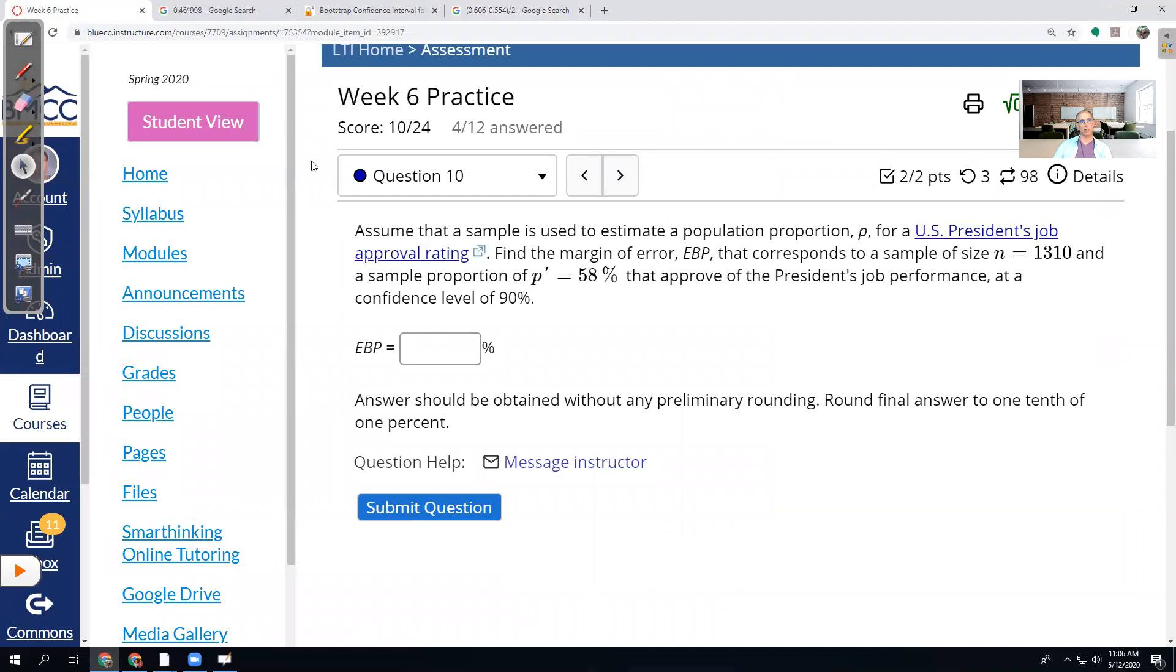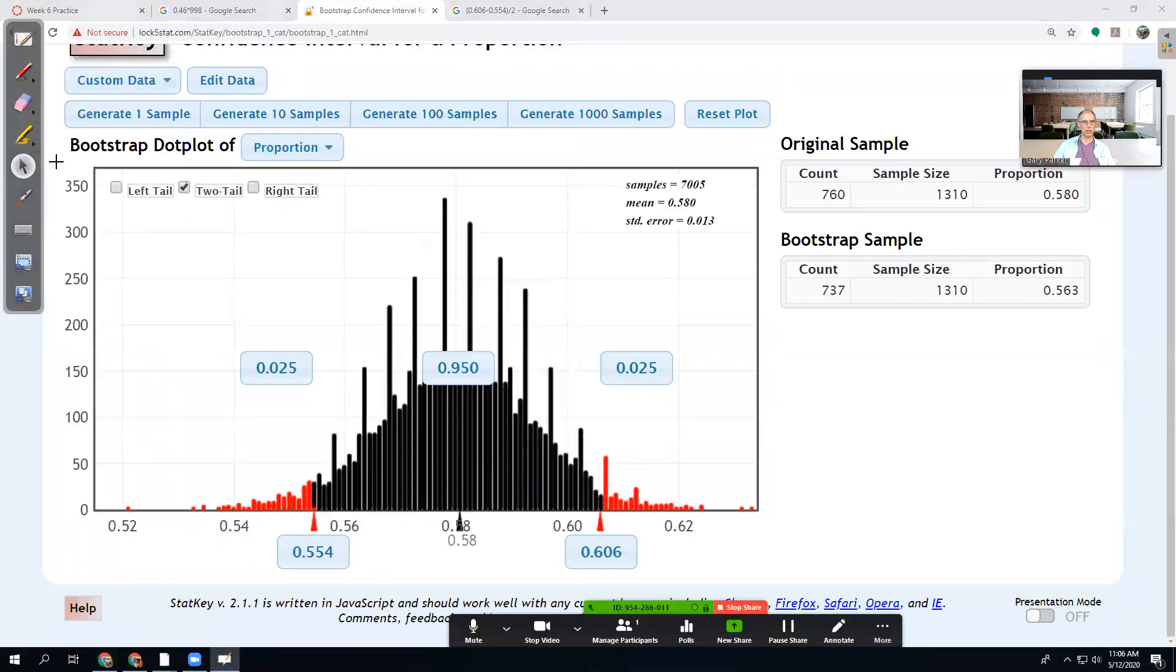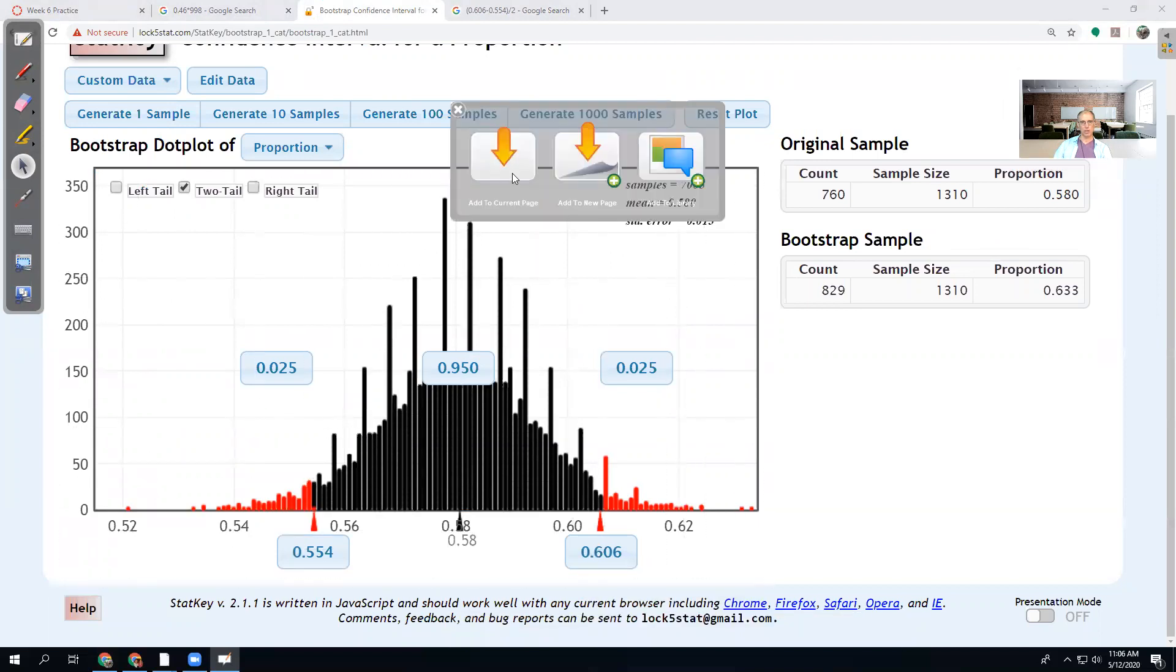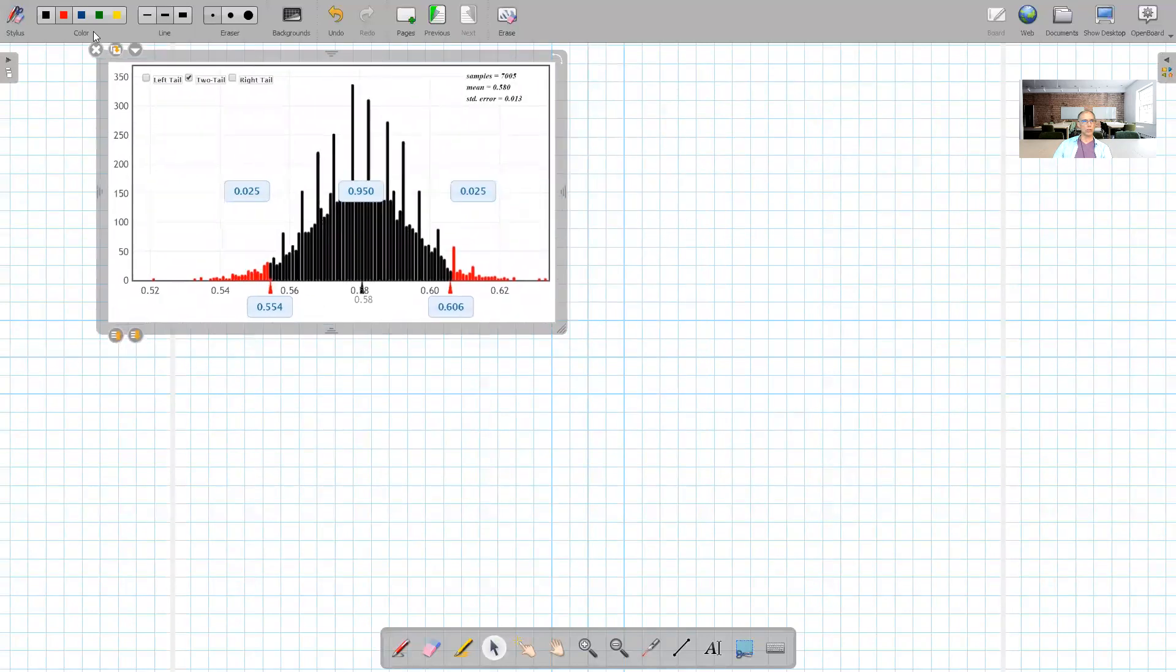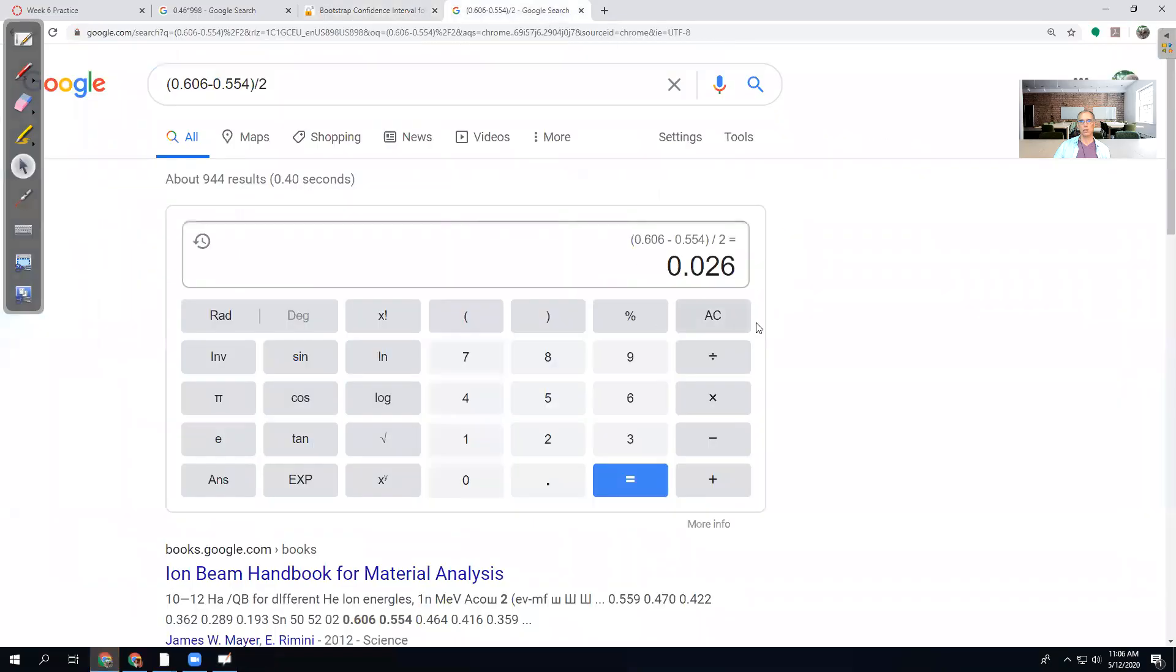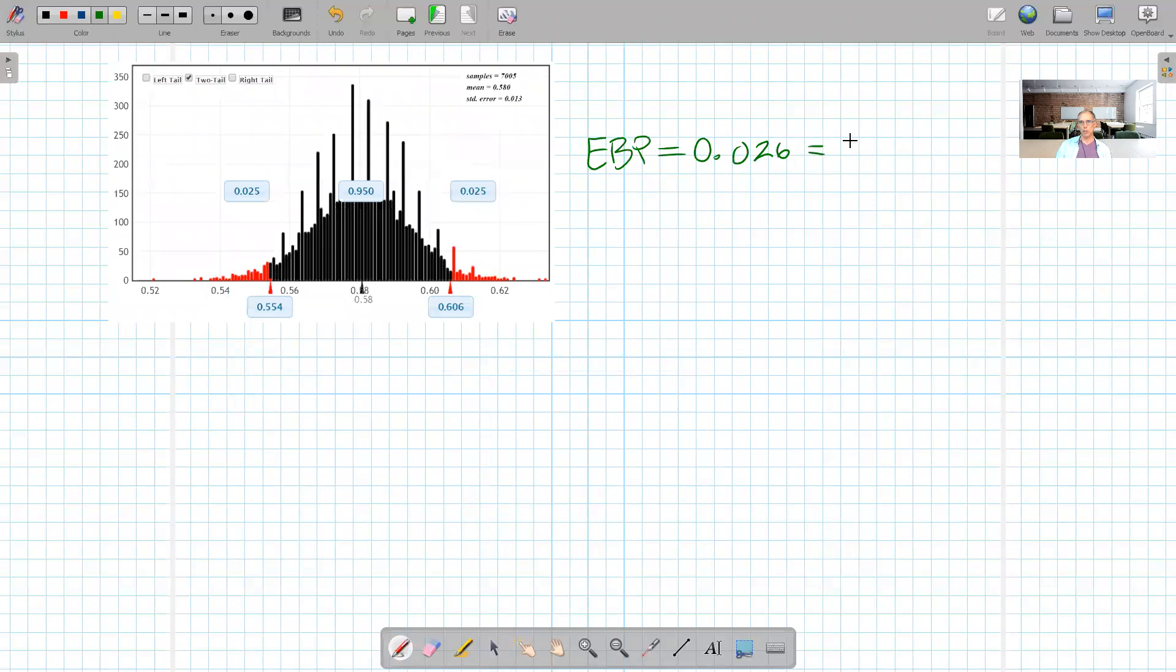Calculator, parentheses, 0.606 minus 0.554. So we're going to do the subtraction and then divide by 2. So the parentheses is important unless you use two steps. And I get a margin of error about 2.6% if I'm using the right confidence level. So this said use a 90% confidence level, so we get to do it again. But I do want to make a note of this just for fun. So go back. Let's make a copy of this and compare it to a 95% confidence interval to see how the confidence level matters or not.